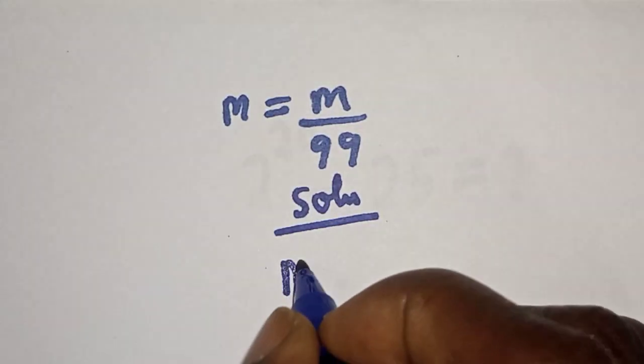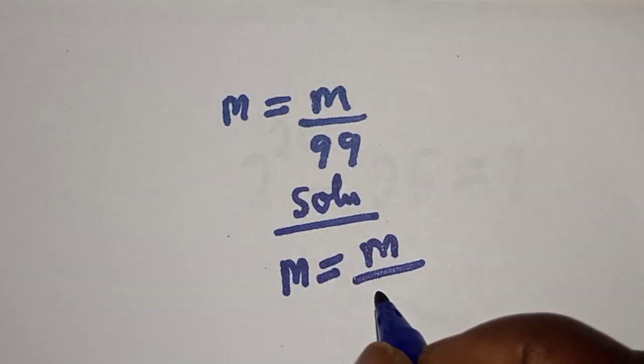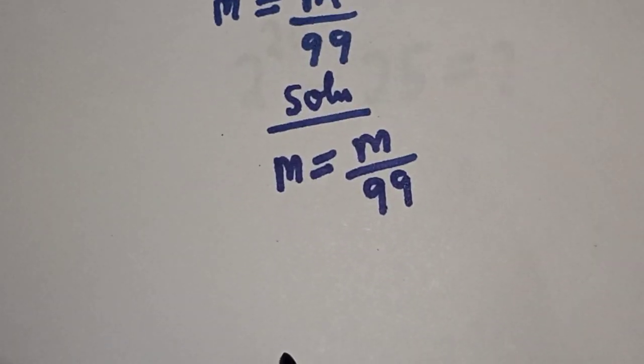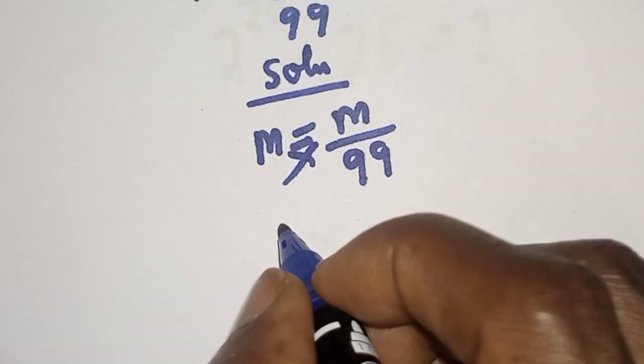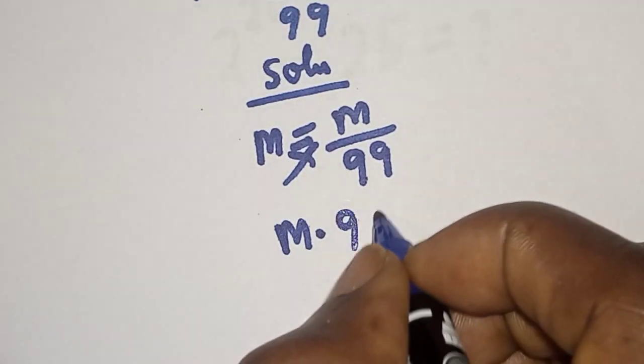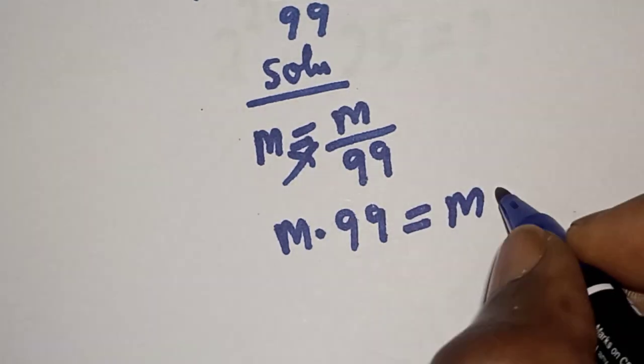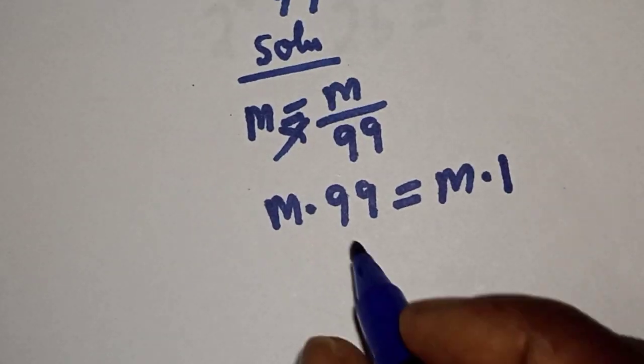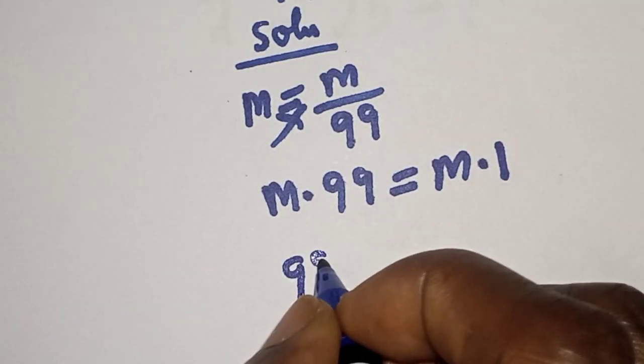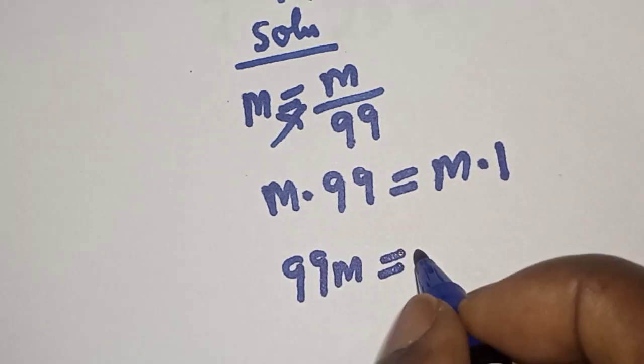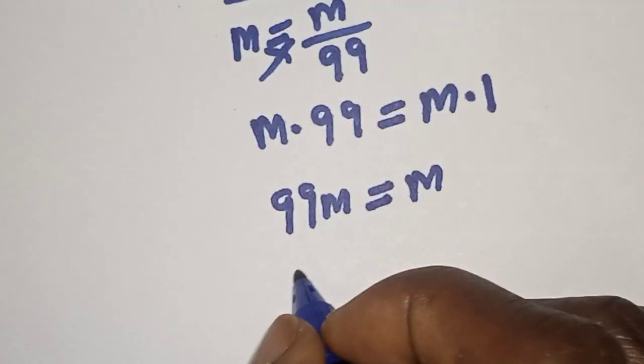We have the given equation M equals M over 99. Now, let's cross multiply. M multiplied by 99 equals M multiplied by 1. So, 99M equals M.